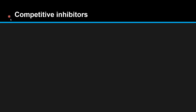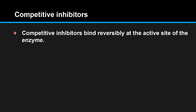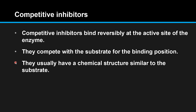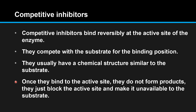Competitive inhibitors bind reversibly at the active site of the enzyme. They compete with the substrate for the binding position and usually have a chemical structure similar to the substrate. Once they bind to the active site they do not form products — they just block the active site and make it unavailable to the substrate.